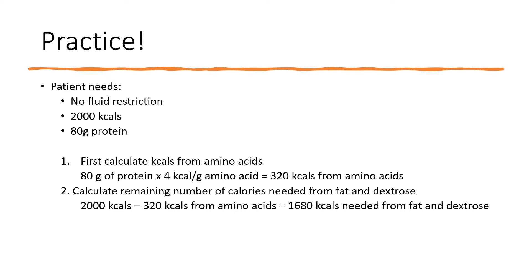Let's say we have a patient who needs 2,000 calories and 80 grams of protein. First, we'll calculate how many calories they'll receive from 80 grams of amino acids: 80 grams × 4 calories per gram = 320 calories from amino acids. Then calculate the remaining calories needed from fat and dextrose: 2,000 − 320 = 1,680 calories needed from fat and dextrose.